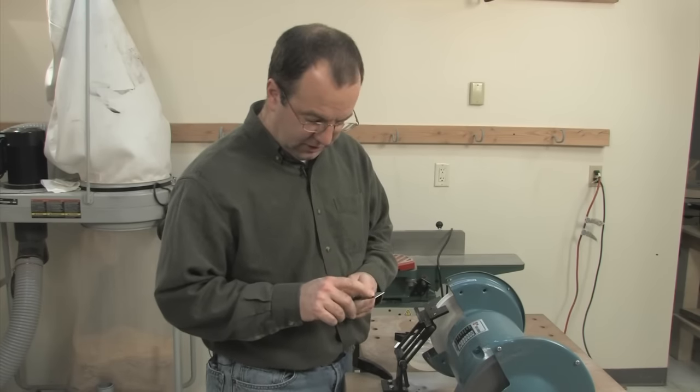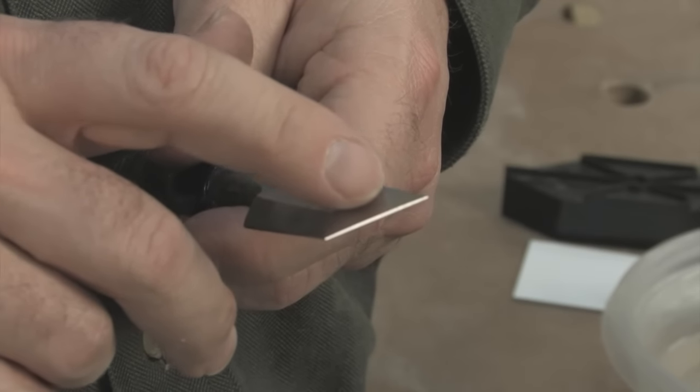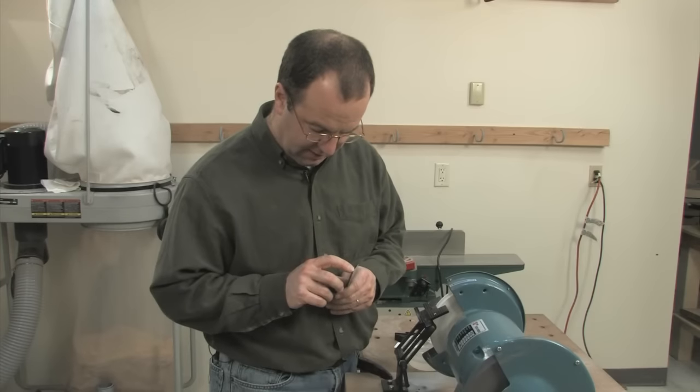Once the grinder marks reach the tip, you're going to start seeing that blunt tip start to disappear. The great thing is you can use that blunt tip to track your progress and make sure you're grinding evenly.